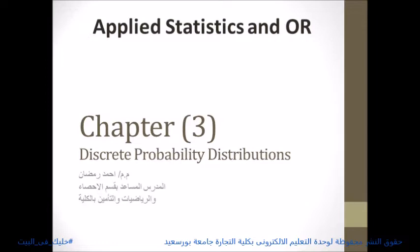What is a discrete random variable? The consecutive values of a discrete random variable are separated by a specific gap. The values of a discrete random variable may assume either a finite number of values or a countably infinite sequence of values such as 0, 1, 2, and so on.